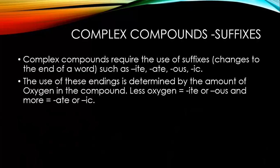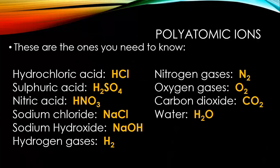Let's get more complicated. Complex compounds use suffixes like ITE, ATE, OUS, or IC. Suffixes are endings to words. Complex compounds require the use of these suffixes. The use of these endings is determined by the amount of oxygen in the compound. Less oxygen means ITE or OUS, and more means ATE or IC. You don't have to know particularly about that. You just need to memorize these particular polyatomic ions. Hydrochloric acid has IC, sulfuric acid has IC, sodium chloride has IDE. These are ones you need to know both the name and chemical formula for.